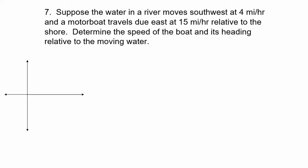In this video we're going to look at an application of vectors. Suppose the water in a river moves southwest at four miles per hour and a motorboat travels due east at 15 miles per hour relative to the shore. Determine the speed of the boat and its heading relative to the moving water. Part of the tricky part of this problem is the wording — relative to the shore and relative to the moving water — and what does all that mean?